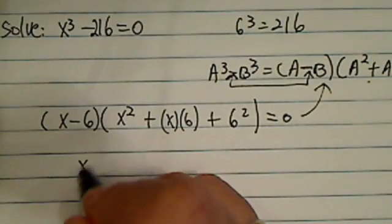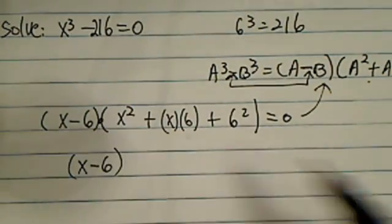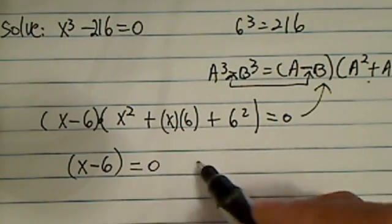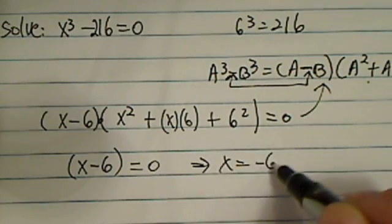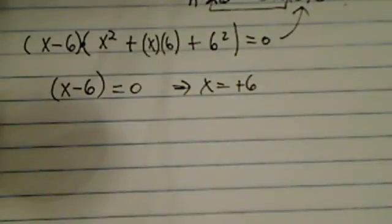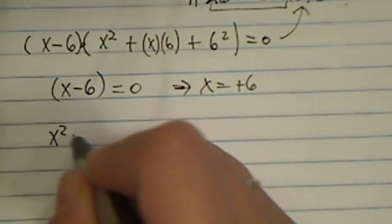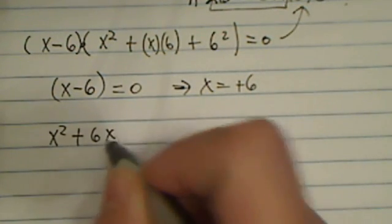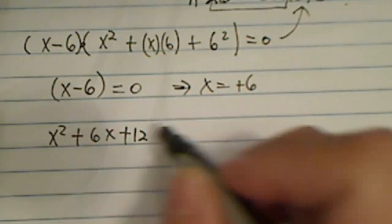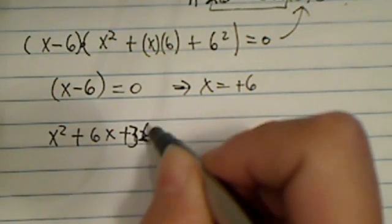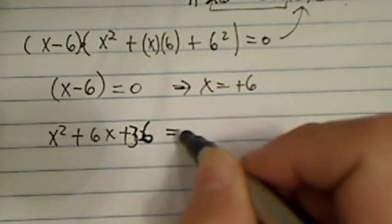And then product has a zero with multiplication, so this is the first easy one. You have positive 6 over here. And the second one, you have to set this messier equation into 36, equal to zero.